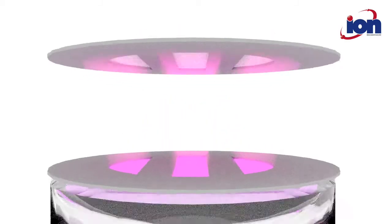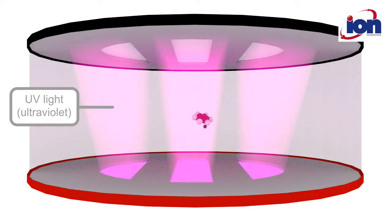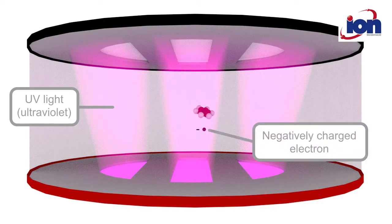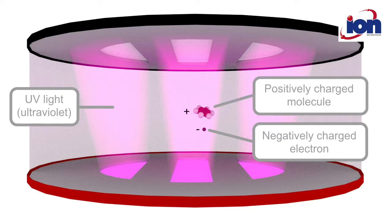When VOC gas enters the detection chamber, ultraviolet light energizes the molecules, releasing negatively charged electrons. The VOC molecules therefore become positively charged.